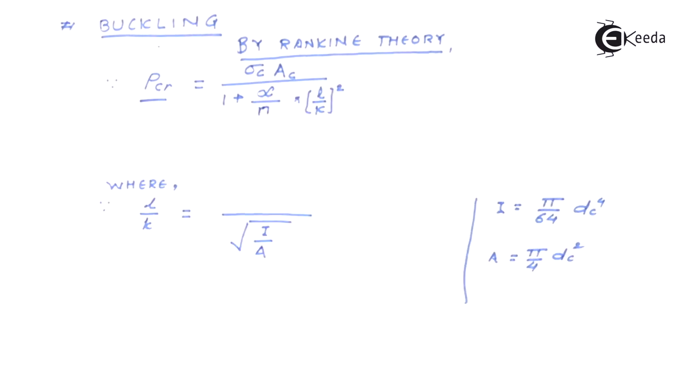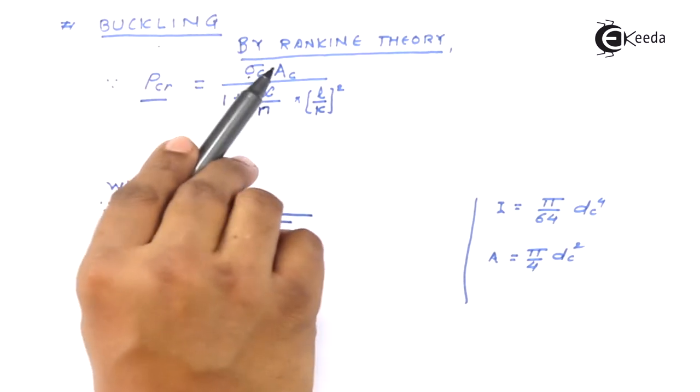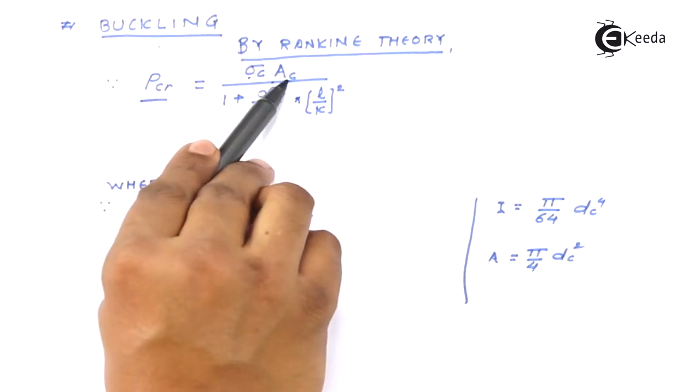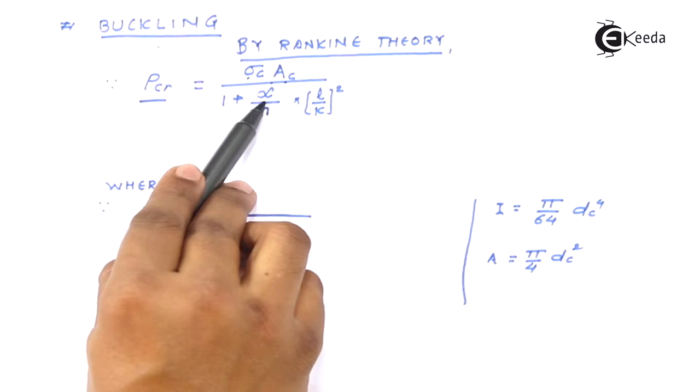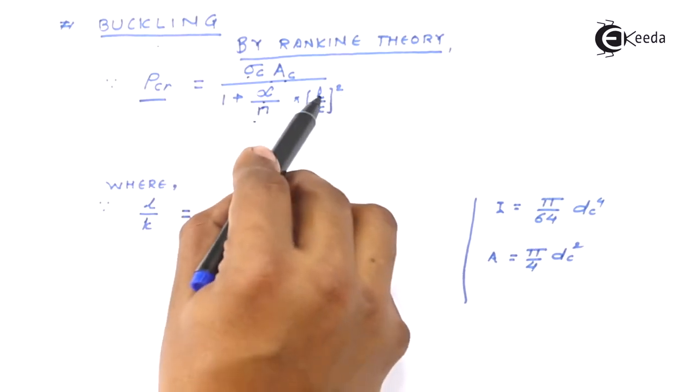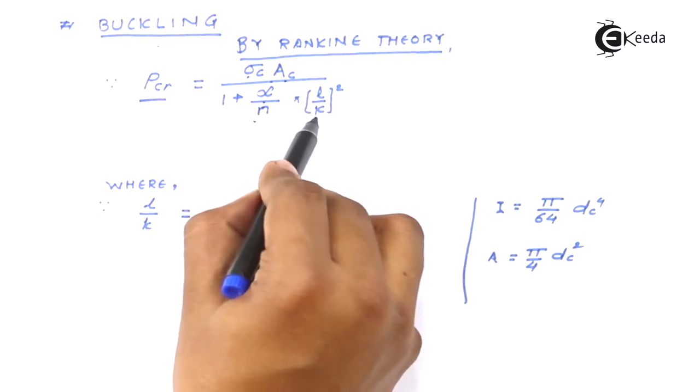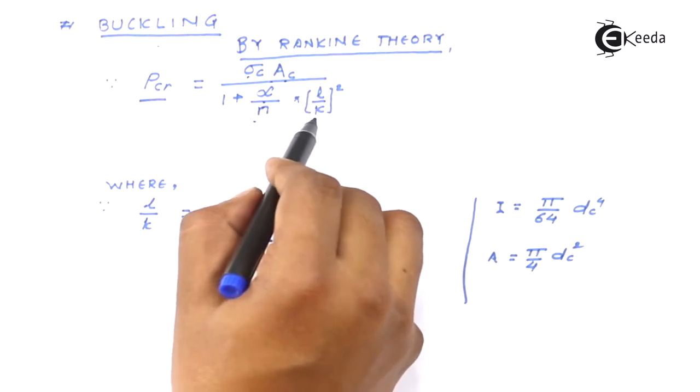By Rankine theory we know that this is the formula where this is the compressive strength, area of cross section of core diameter, this is the alpha associated with the given material, n is the factor and this is the ratio of your length to the radius of gyration.